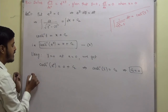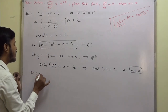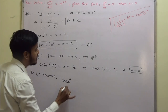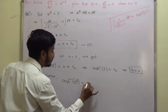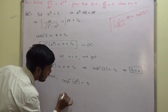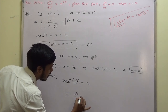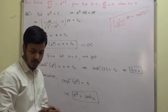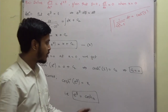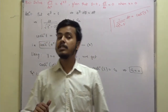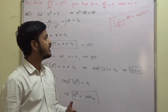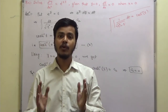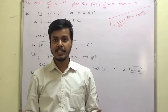After getting c₂ = 0, substituting in equation 2, it becomes: cosh⁻¹(e^y) = x, which gives e^y = cosh(x). This is the required solution. The two important things to remember from this problem are the formula for ∫ dt/√(t²−1), and the adjustment of multiplying and dividing by e^y. Thank you for watching and have a good day.